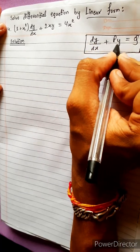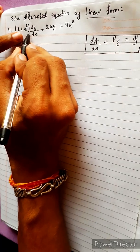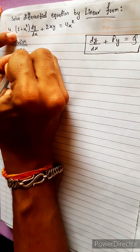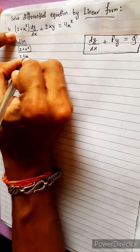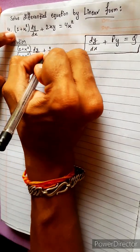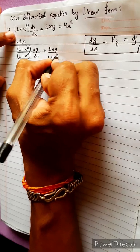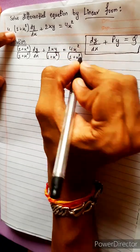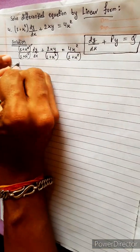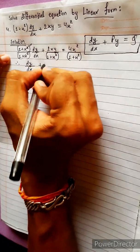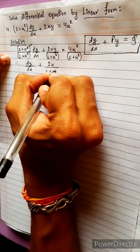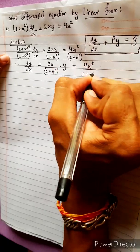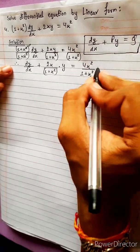So, the function of x is a constant number. y is equal to 1 plus x squared. We divide through by 1 plus x squared, giving dy/dx plus 2xy divided by (1 plus x squared) equals 4x squared divided by (1 plus x squared). Let's compare it with the standard form. This is equation 1.